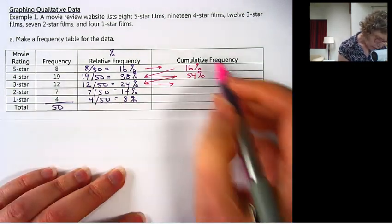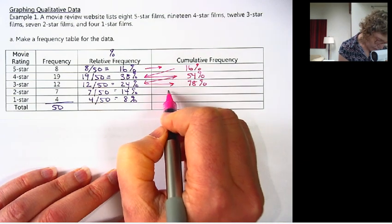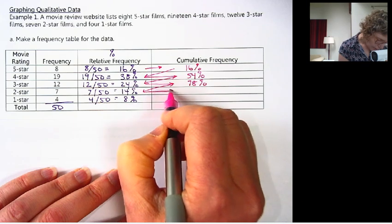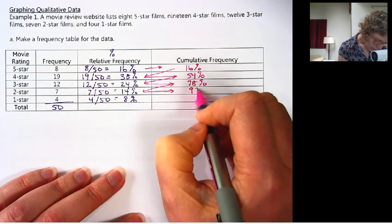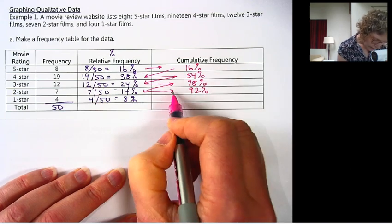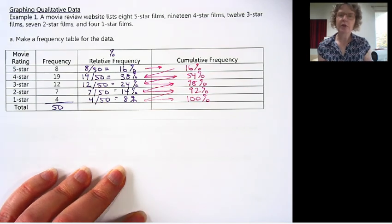which is 78%. Plus 14 is 92%. And you can see if you add 8, we get 100%.